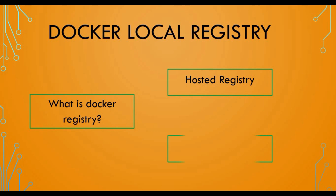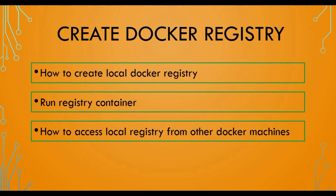In this tutorial, we are going to see how we can set up our own local registry — not a remote registry like JFrog or anything. This will be hosted on your computer itself. We'll use an open source registry image, create our local registry, run it as a container, and see how to access images uploaded to the local registry from other Docker machines.